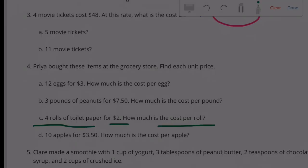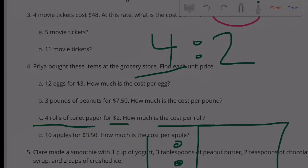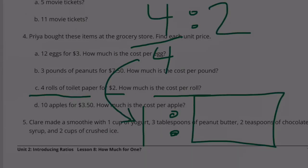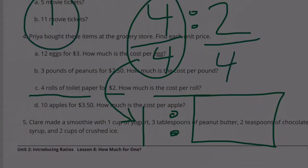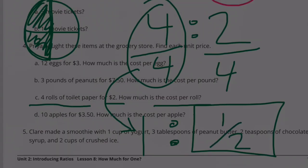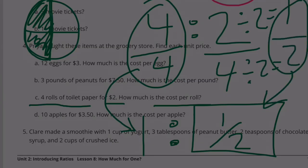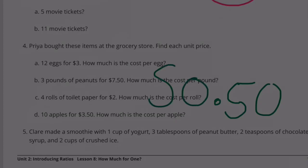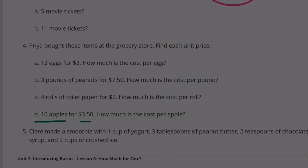(c) Four rolls of toilet paper for $2. We want the price for one roll. Divide both sides by four: four divided by four is one, and two divided by four is two-fourths. Two-fourths equals one-half — you can see this because two divided by two equals one and four divided by two equals two. One-half of a dollar is fifty cents, so one roll of toilet paper costs $0.50.